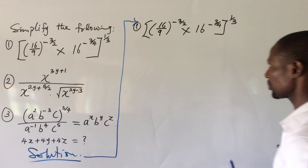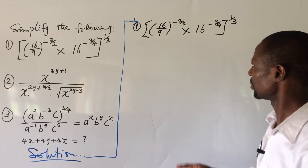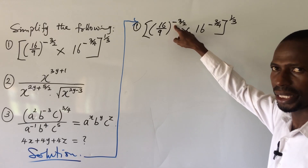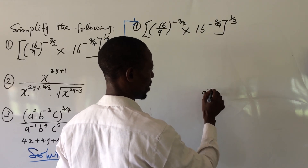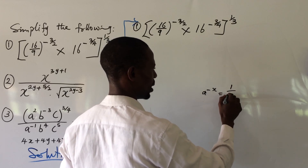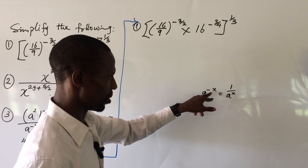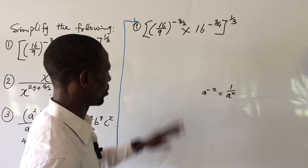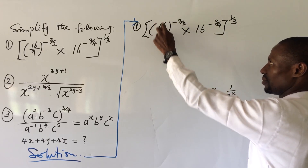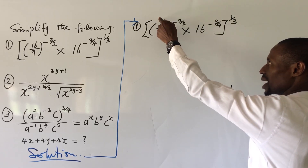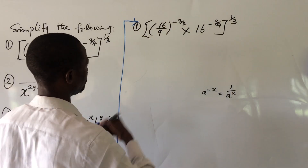Now how do we solve this? According to BODMAS we treat the terms inside the square brackets first. There's something to note here — we have a negative power. According to the law of indices, a to the power of minus x is the same as 1 all over a to the power of x. Instead of introducing 1 and a division sign, I want to interchange what I have — take the denominator to the numerator and the numerator down, so the minus sign leaves the system.